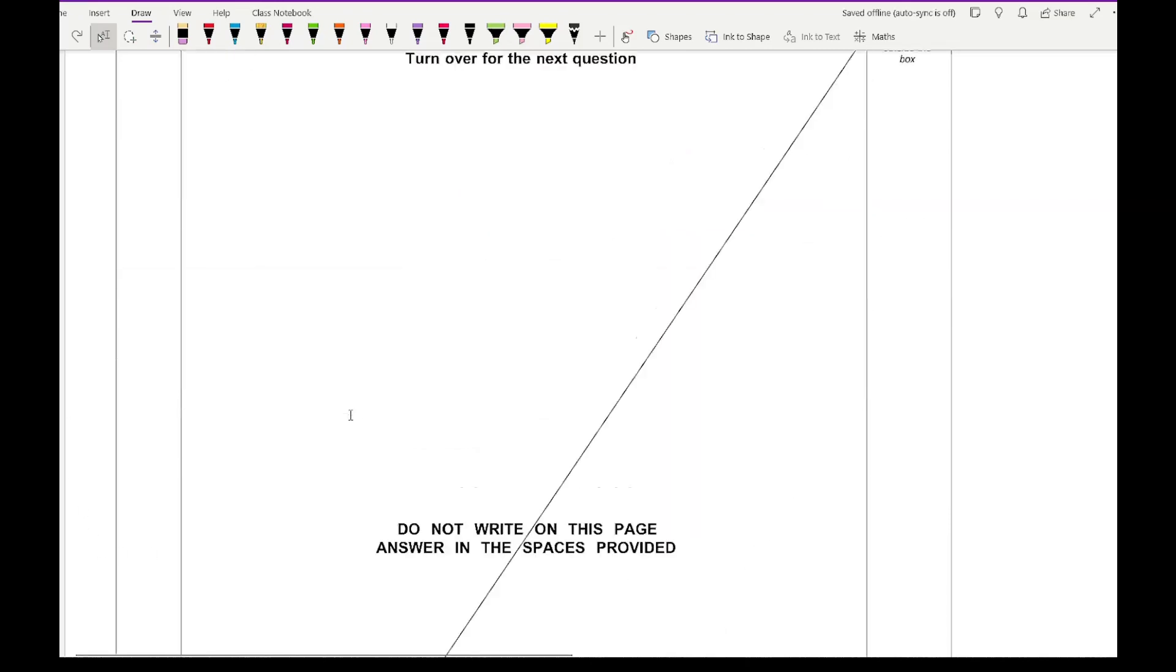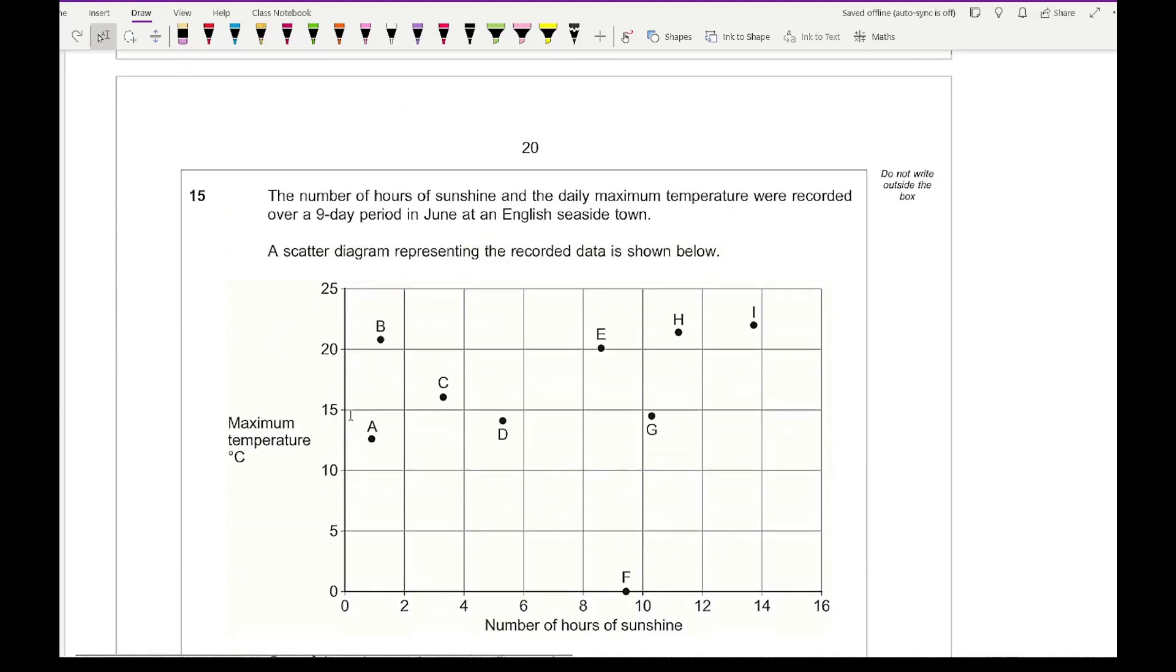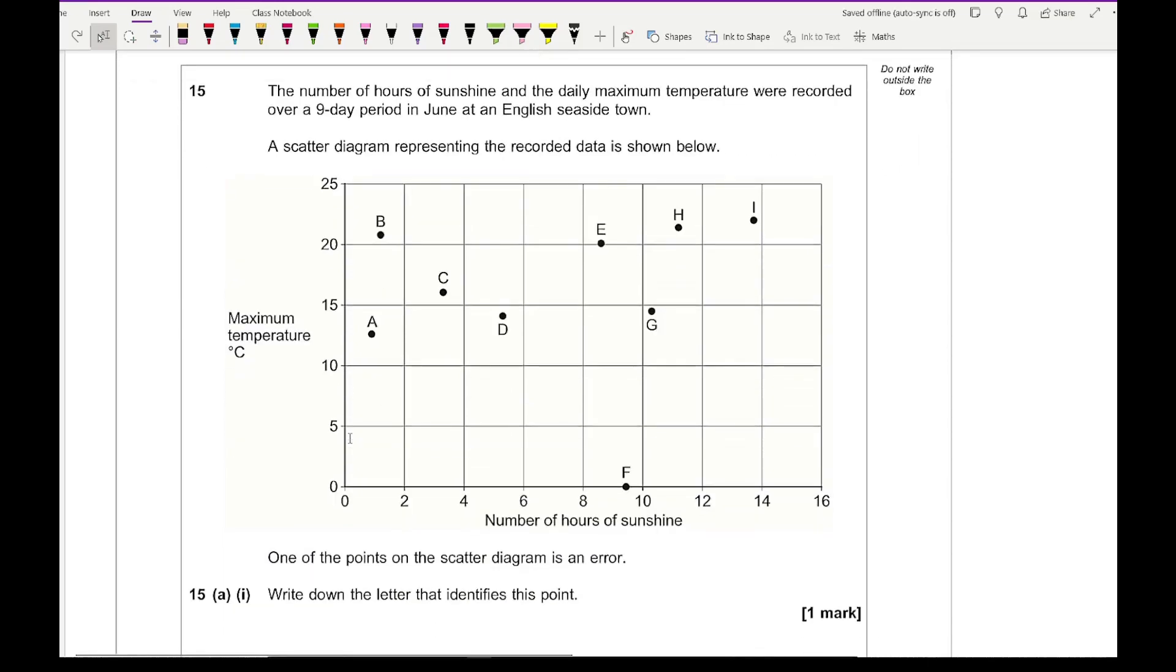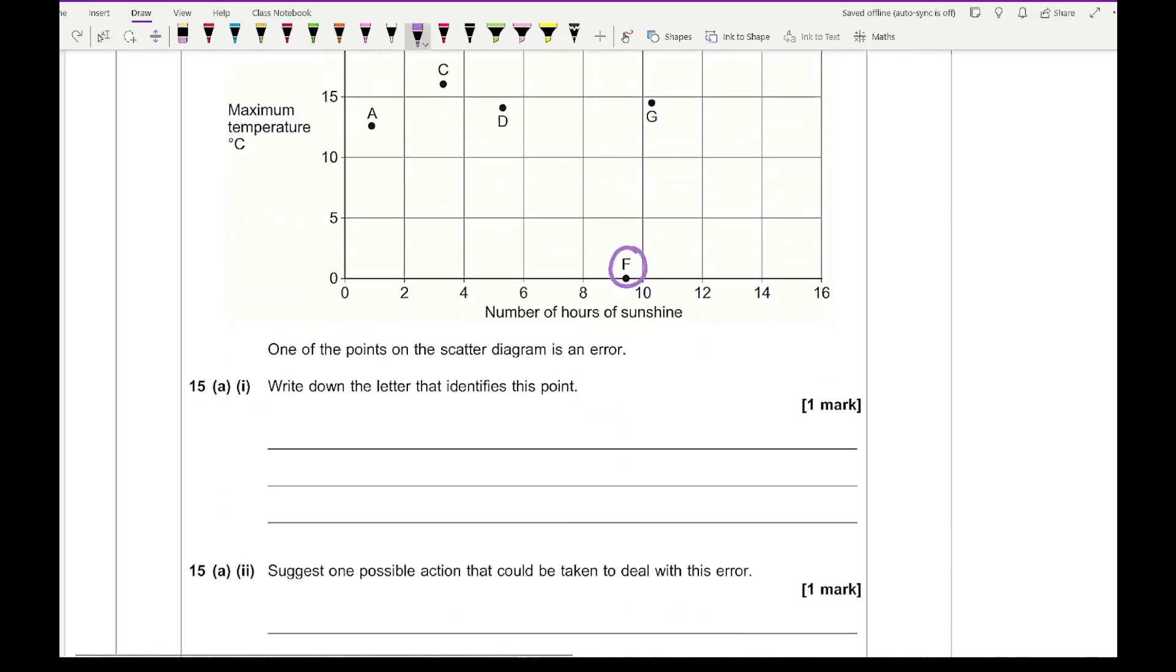Moving on to question 15, it says the number of hours of sunshine and daily maximum temperature were recorded over a nine day period in June at an English seaside town. A scatter diagram representing the recorded data is shown below. One of the points on the scatter diagram is an error. Write down the letter that identifies this point. The one we need to highlight is F because that one's away from all the crowd. I don't know why they've given you three lines of working out, but the answer is F.